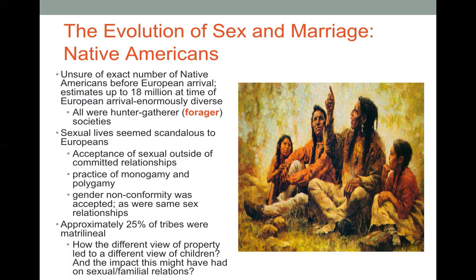This mobility was one of the things that probably contributes to some real distinctions between these societies and the Puritan society. Their sexual lives seemed particularly scandalous to Europeans at the time. There was acceptance of sexual relations outside of committed relationships, and depending on the society, practices of both monogamy and polygamy. Gender nonconformity was accepted, as were same-sex relationships. Also, 25% of the tribes were matrilineal, and even the ones that weren't matrilineal very few had the kind of rigid patriarchal structures seen in Puritan societies.